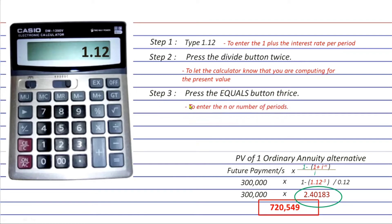If you can still remember, this is done in order to enter the number of periods or the n, which is in our illustrative example three years. On your first press the result will be this, and on your second press you will have this, and on the third you will get this. This is already the result of 1 plus i raised to the power of negative n.